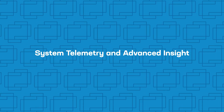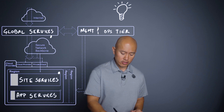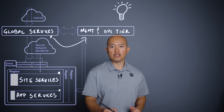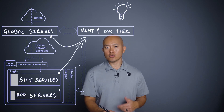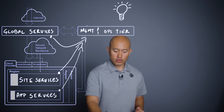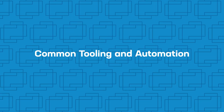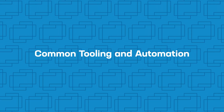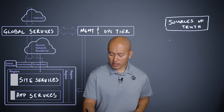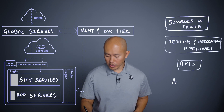Then we have the benefits from system telemetry and advanced insights. Consistent services across the application state enable robust and consistent telemetry, feeding data systems that can leverage existing and future technology to continuously improve security and performance with less human intervention. And then there is the common tooling and automation tier, which includes sources of truth, testing and integration pipelines, and APIs and automation tasks.